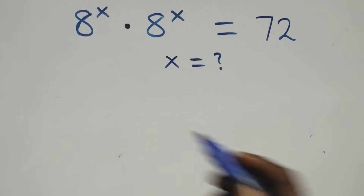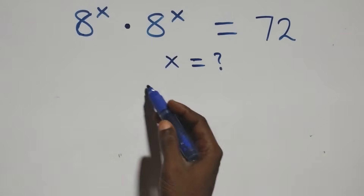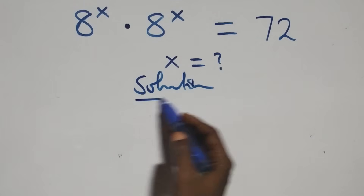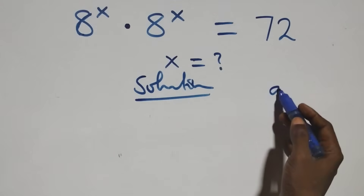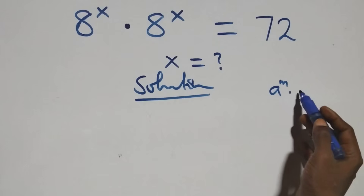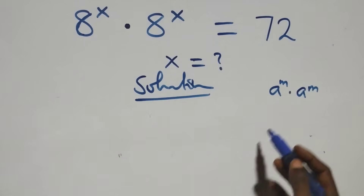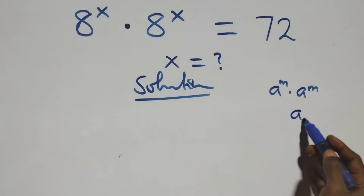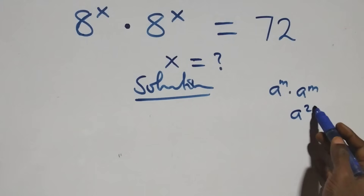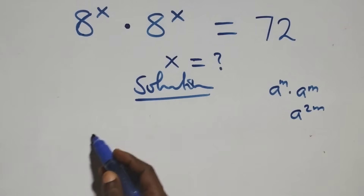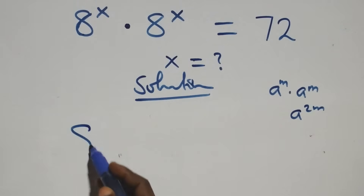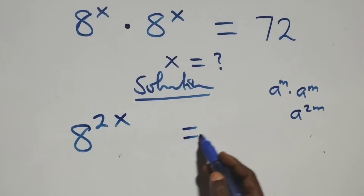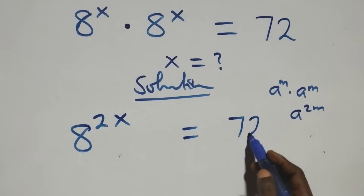Hello, welcome. Here we solve a nice exponential equation. We use the rule that a raised to power m times a raised to power m — when we have the same base, we can add the powers, giving a raised to power 2m. Applying this here, we have 8 raised to power x times 8 raised to power x, which gives 8 raised to power 2x, equals 72.